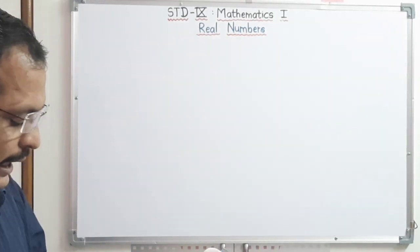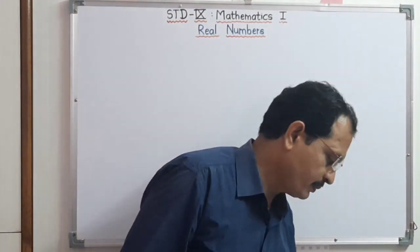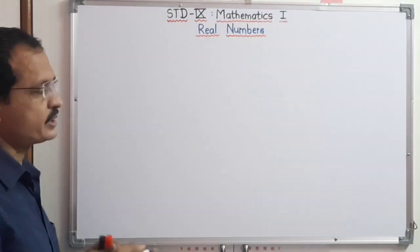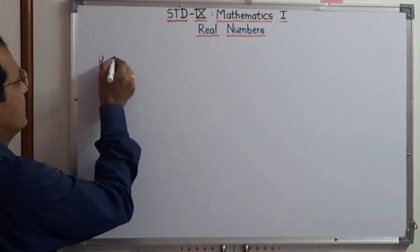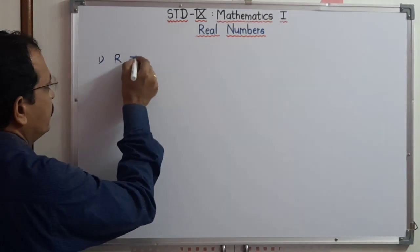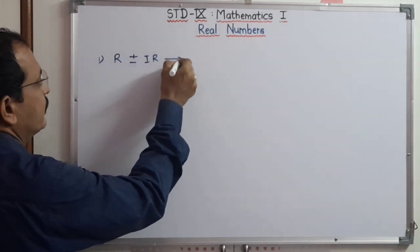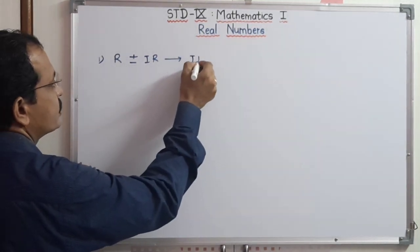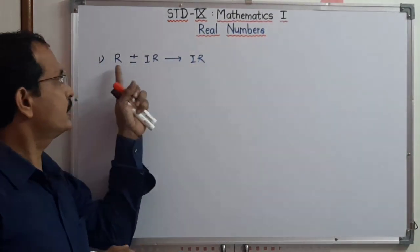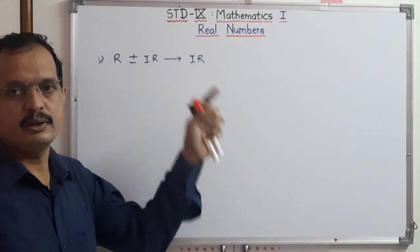The first property is about addition or subtraction of a rational number with an irrational number. If we add or subtract a rational number with an irrational number, then the answer is an irrational number. That means if we add an irrational number with a rational number, the final answer will be an irrational number.